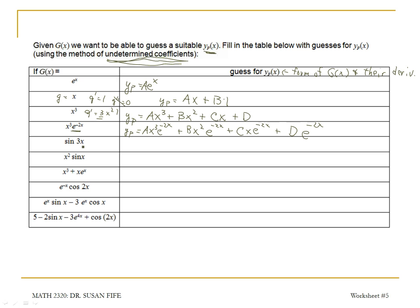How about sine of 3x? When you take the derivative of sine 3x, the 3 comes out as a coefficient and will be handled by the coefficient of the second term. The derivative of sine is cosine of the same angle. So here we get A sine 3x plus B cosine 3x.